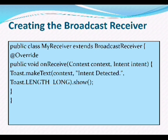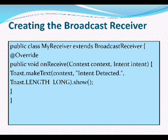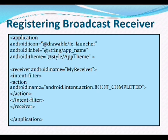Next, how to create the broadcast receiver. The broadcast receiver is implemented as a subclass of the BroadcastReceiver class. Here, MyReceiver is the class name that extends BroadcastReceiver and overrides the onReceive method. It takes two parameters — the Context and the Intent. Each message is received as an Intent object parameter, and we declare a Toast. This is the format for creating the broadcast receiver.